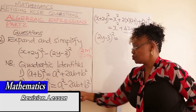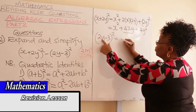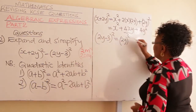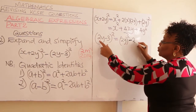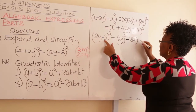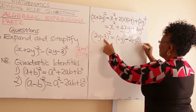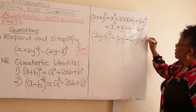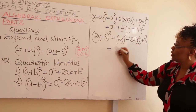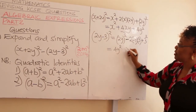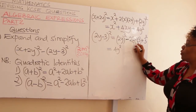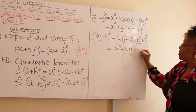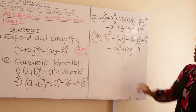For the second one, (2Y - 3) squared — this is related to identity two, where there is a minus. Square the first term to get 4Y squared, then minus 2 times 2Y times 3 to get 12Y, then plus 3 squared which is 9. So the second expansion gives 4Y squared minus 12Y plus 9.